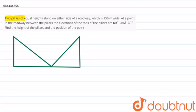Two pillars of equal height stand on either side of a road which is 150 meters wide. At a point in the roadway between the pillars, the elevation of the top of the pillars are 60 degrees and 30 degrees. So we need to find the height of the pillars and position of the point.